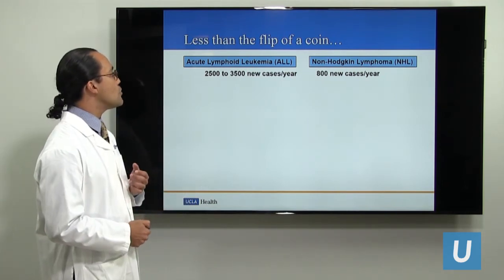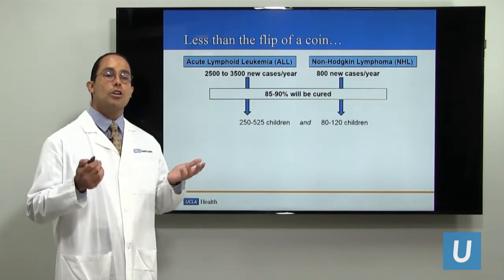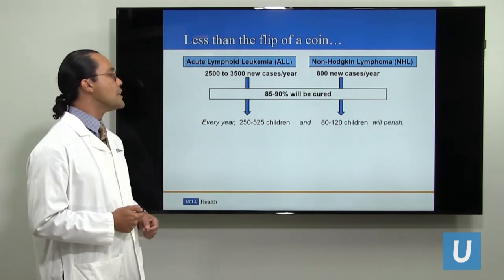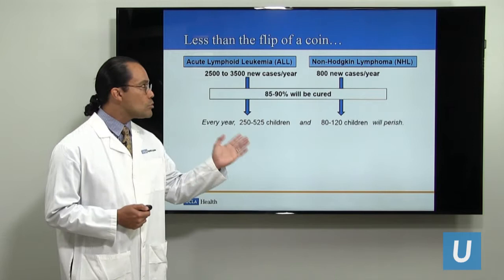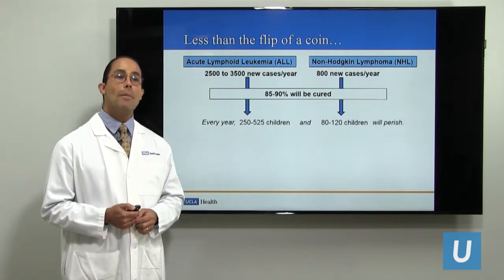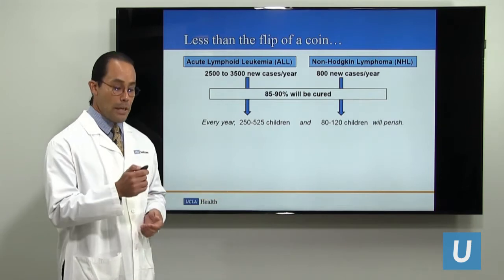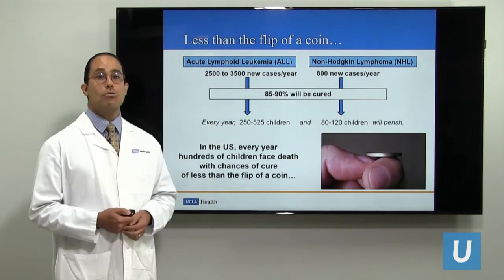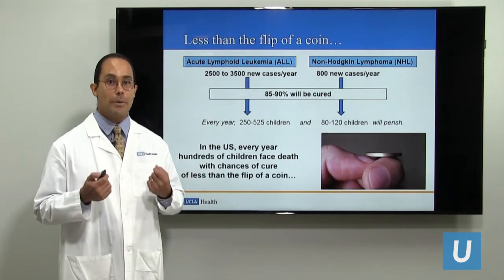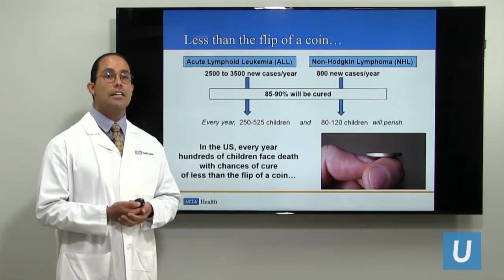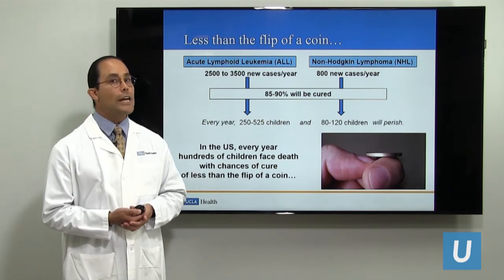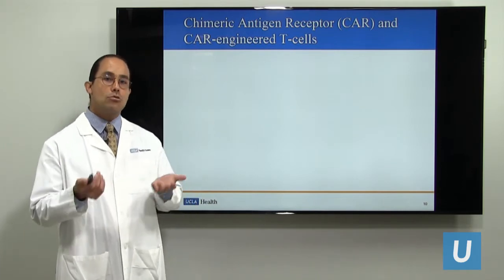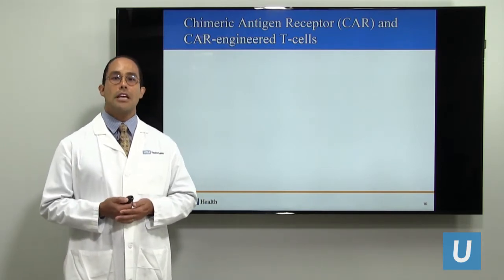About 90% of pediatric patients with ALL leukemia and non-Hodgkin's lymphoma will be cured using chemotherapy alone. But that means about 200 to 300 kids with ALL and about 100 patients with non-Hodgkin's lymphoma won't be cured with chemotherapy and need something else. For those patients, the chances of surviving are only about 20 to 40%. Because of that, new approaches were needed — and that's when immunotherapies and cellular therapies came into place.